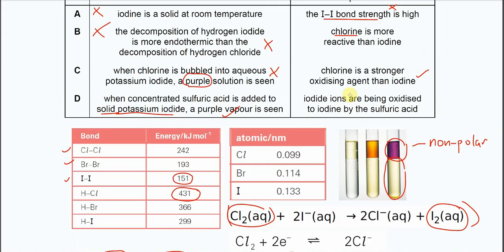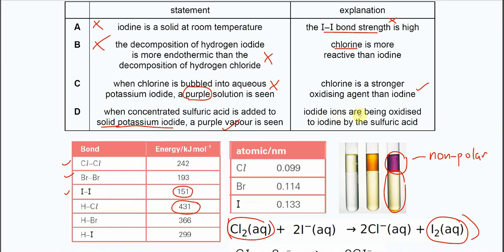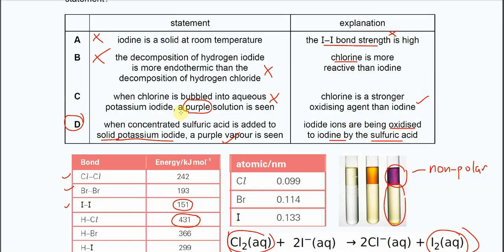And explanation is, iodide are being oxidized to iodine by sulfuric acid. Yes, as I told you just now, the iodide can be oxidized and form iodine. So answer is D, then. That's all. Thank you.